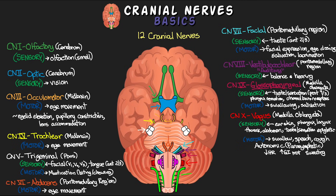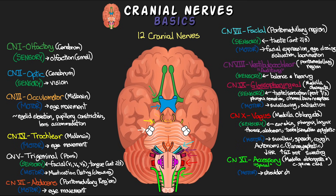Cranial nerve eleven is the accessory nerve, originating from the medulla oblongata as well as the cervical spinal cord. Because of this dual origin, you may also hear it called the spinal accessory nerve. This nerve is strictly a motor neuron and plays a role in shrugging the shoulders and turning the head.